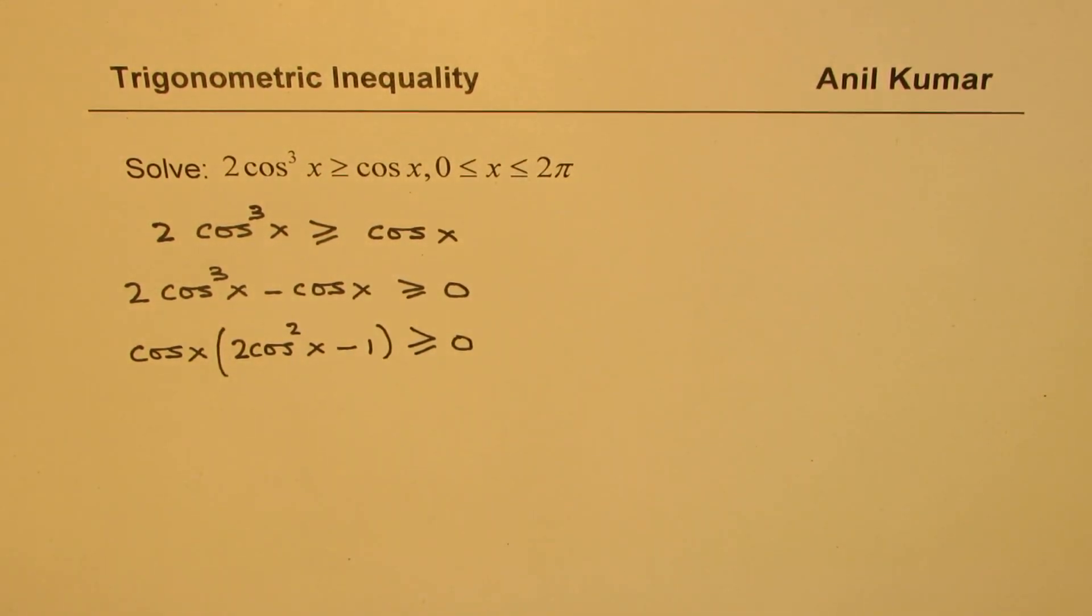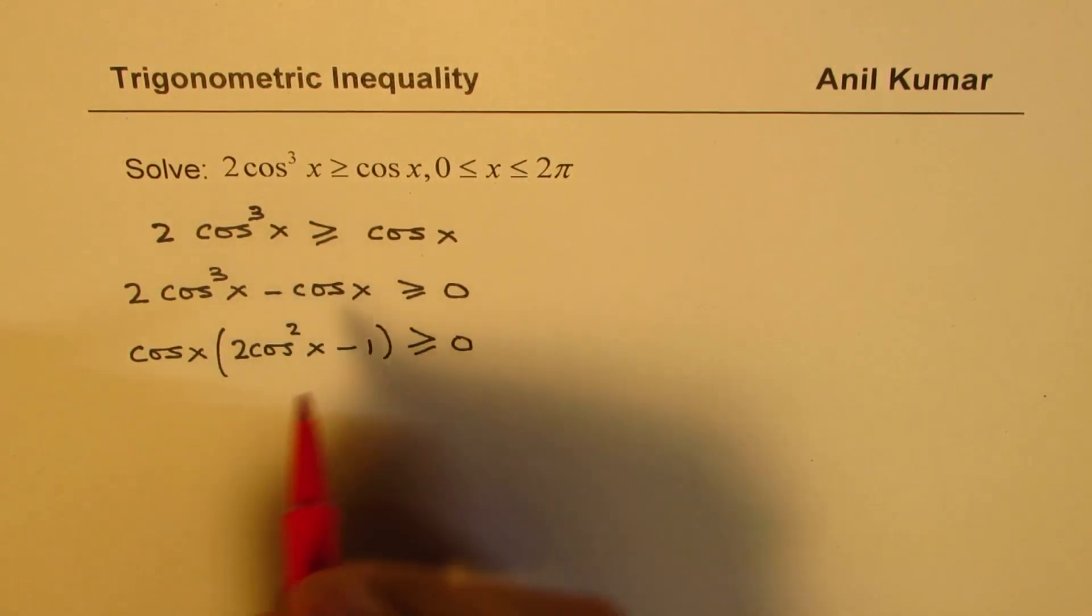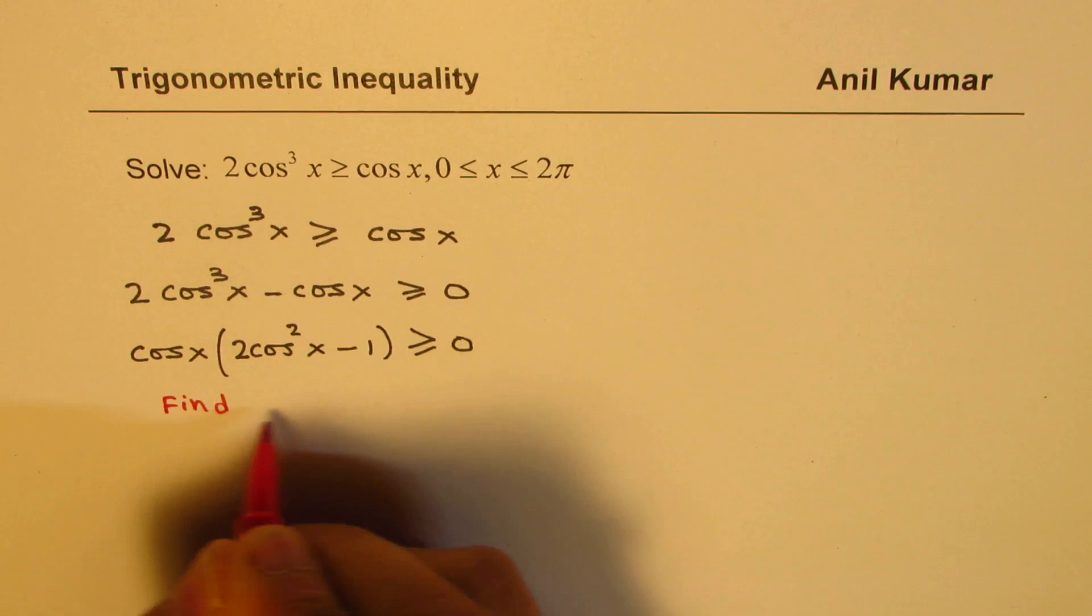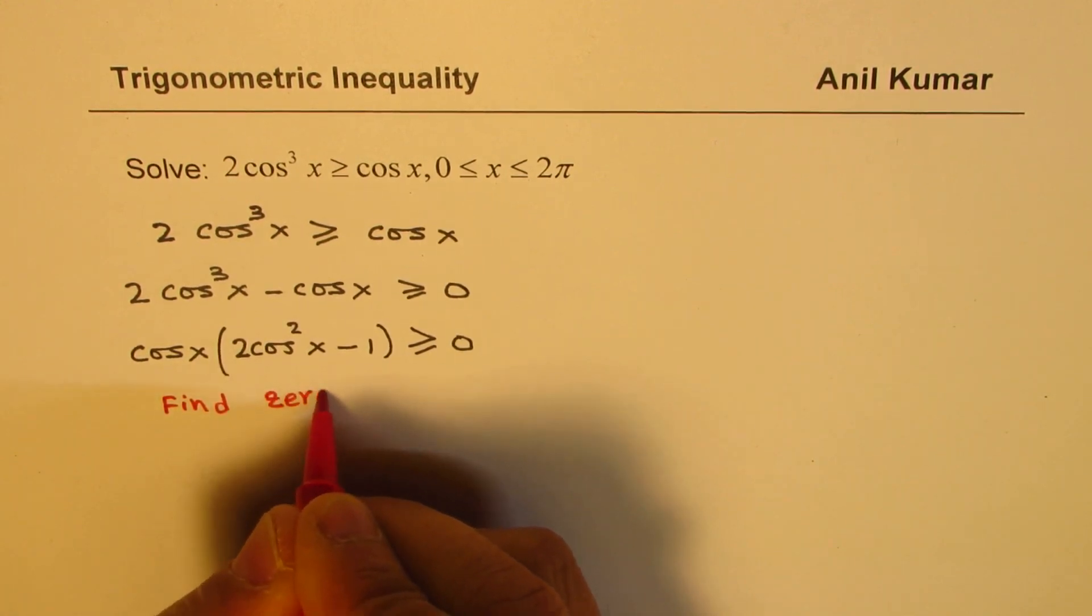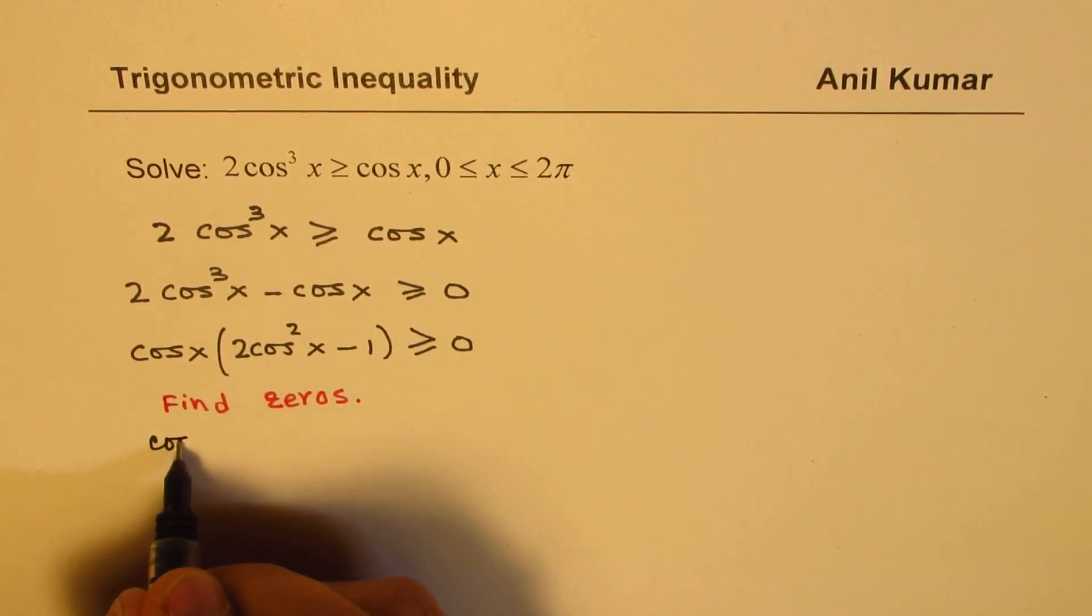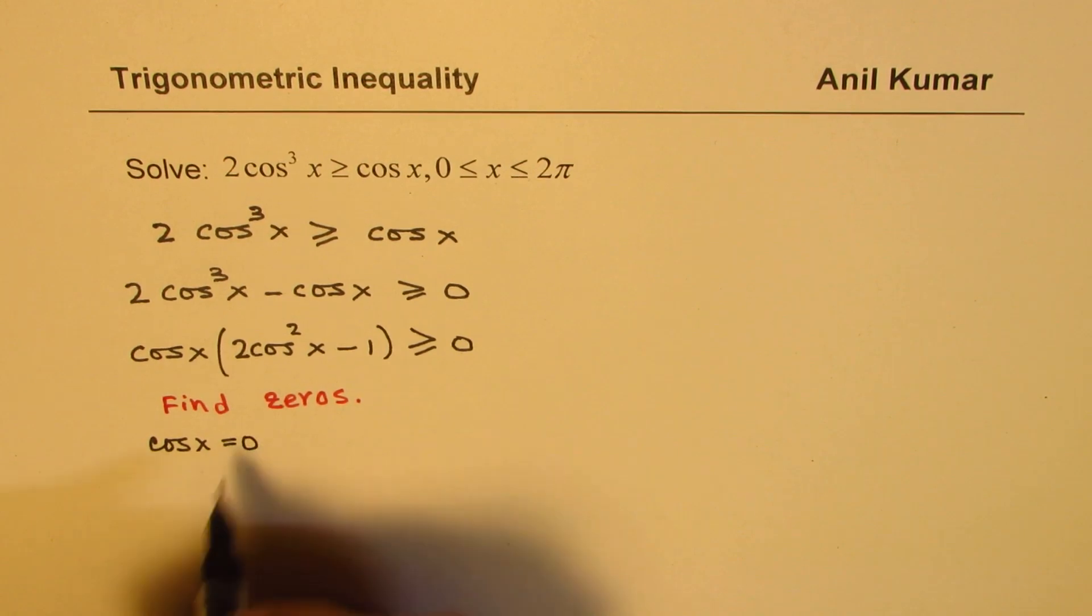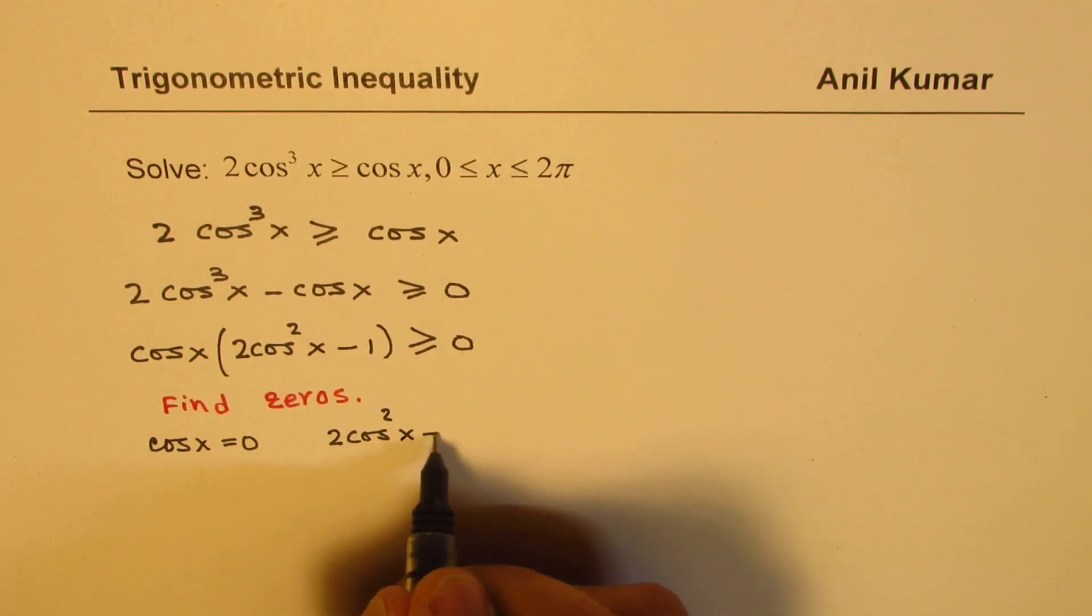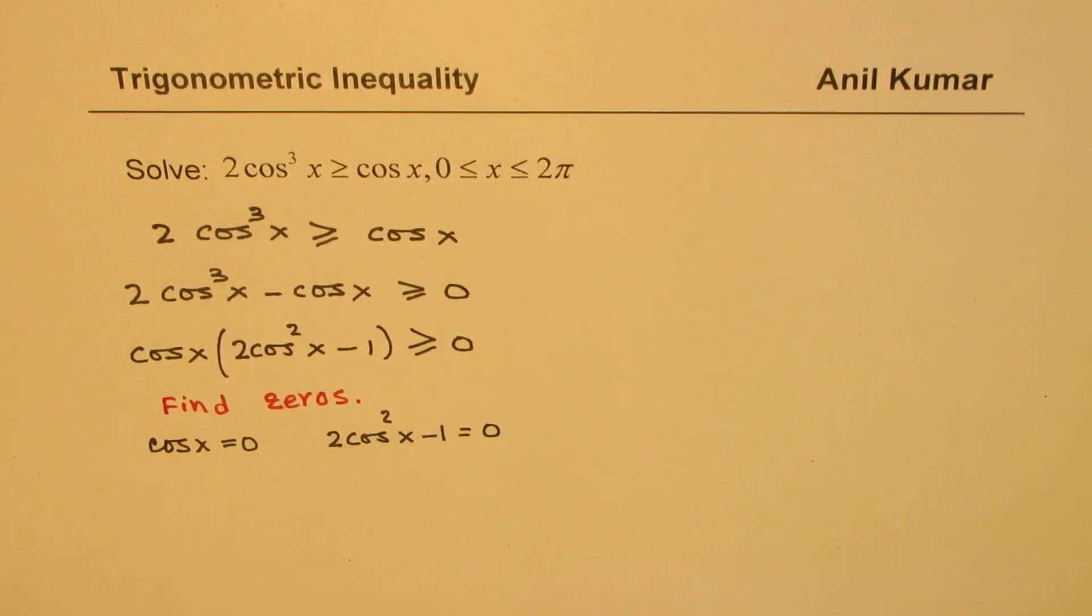At this stage, we can find the zeros, and then table of values. Now zeros are because of the two factors. One is cos x. So cos x = 0 will give us some zeros and then we have 2cos²x - 1 = 0. So we need to solve for both to get these zeros.